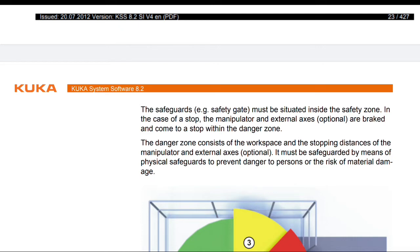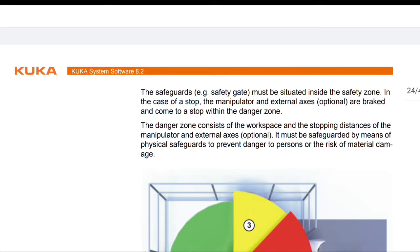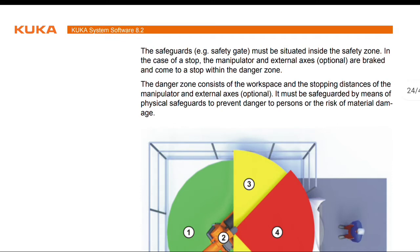In the case of a stop, the manipulator and external axes brake and come to a stop within the danger zone. The danger zone consists of the workspace and the stopping distance of the manipulator and external axes. It must be safeguarded by means of physical safeguards to prevent danger to persons or the risk of material damage.